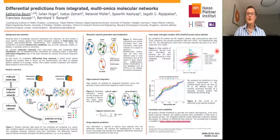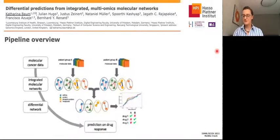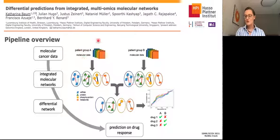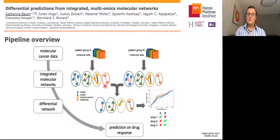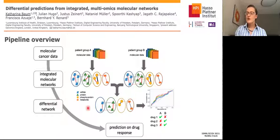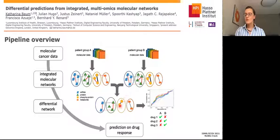Let me give you a short overview of the pipeline. Given two patient groups, for example cancer patients with different phenotypes, groups A and group B, for different molecular data layers, what we do is we generate integrated molecular networks that characterize both patient groups. In the second step, we compute the differential network from the integrated molecular networks of the different patient groups. We use the edge information from the differential network to derive differential predictions, for example on drug response.